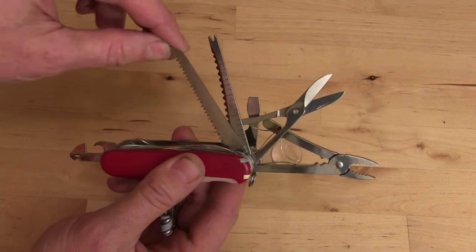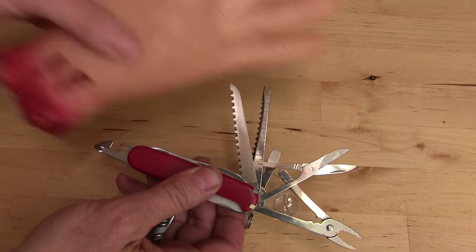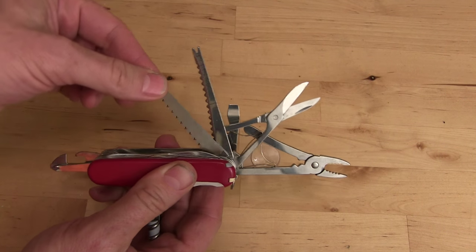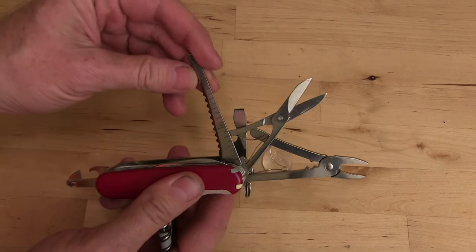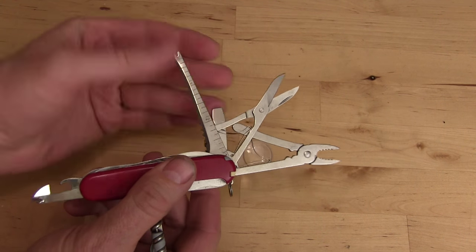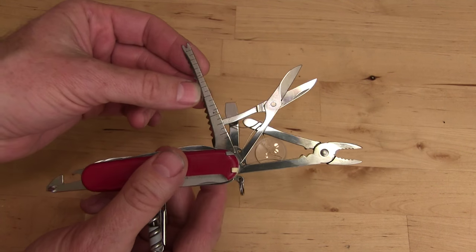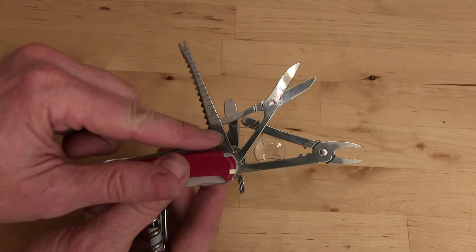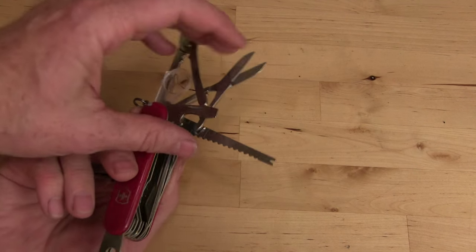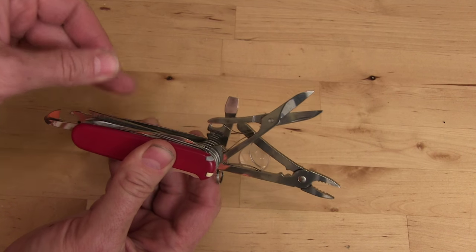Then if you need to cut your own hand off when it's trapped under a rock or you need to cut down a tree, there's this wood blade. There's the fish hook remover and fish scaler. No one on earth has ever used this as a fish scaler, so they know that and they put a ruler in inches and in metric alongside of it so you can use that.